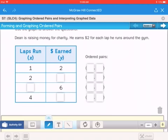So for that one, if he runs one lap, he gets $2. If he runs two laps, he would get $4. If he ran three laps, he would get $6. And if he ran four laps, he would get $8.